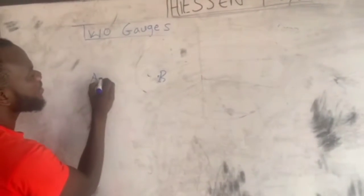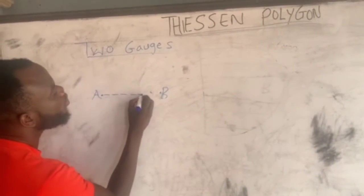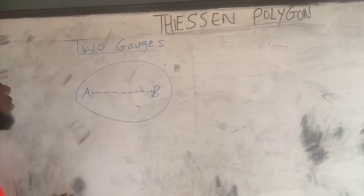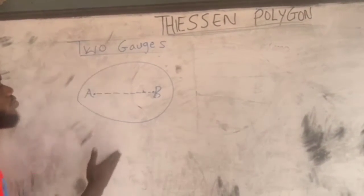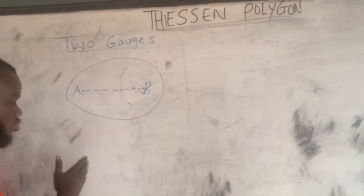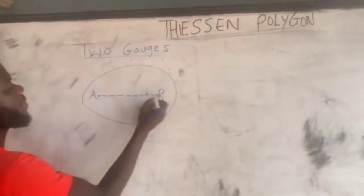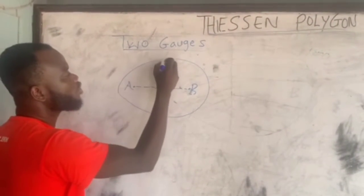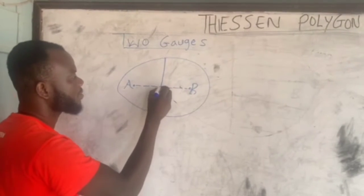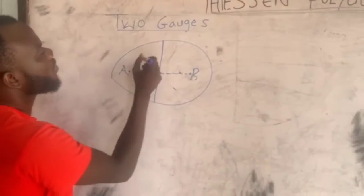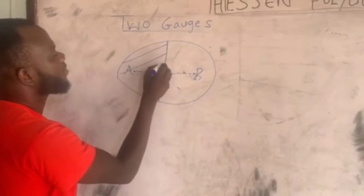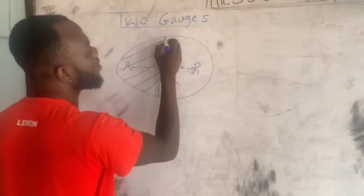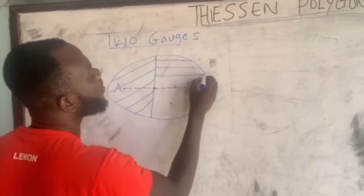First we connect a dotted line between the two gauges. Then we draw something like a circle around the region and find the perpendicular bisector between the two point gauges — that bisector will be in the middle. We then draw a straight line through it, which separates region A from region B. This region is for gauge A and this region is for gauge B.